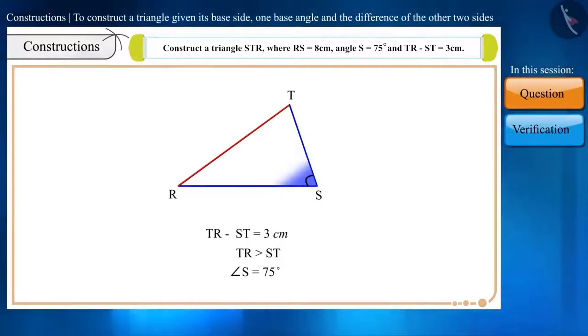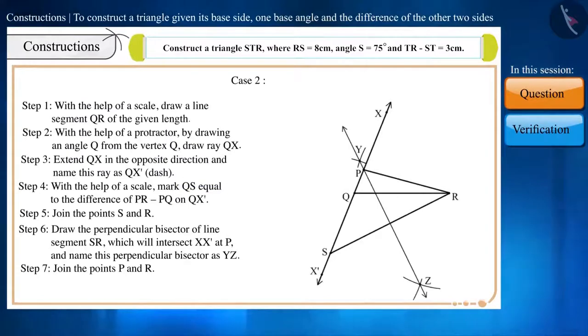Therefore, TR is not a side formed on the base angle. The side formed on the base angle is ST, which is the smaller side. So, we will do its construction as per case 2.